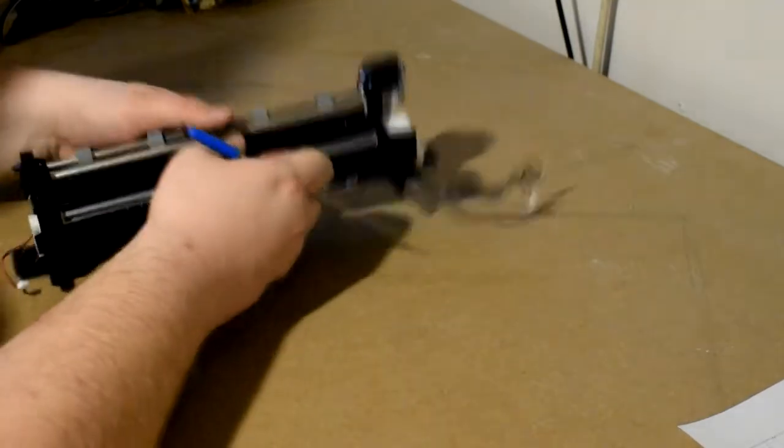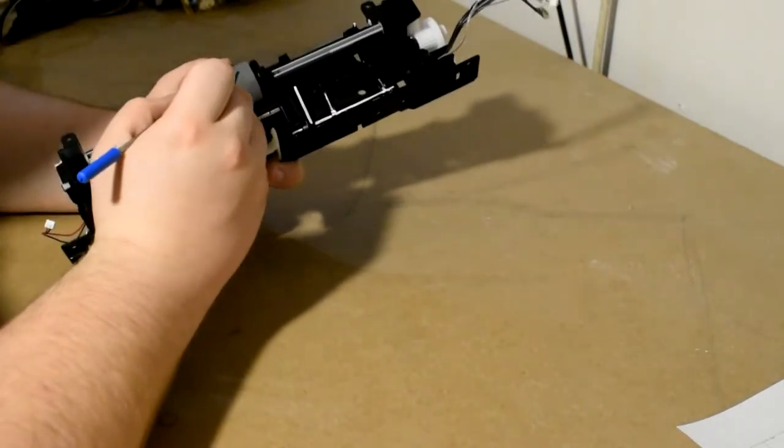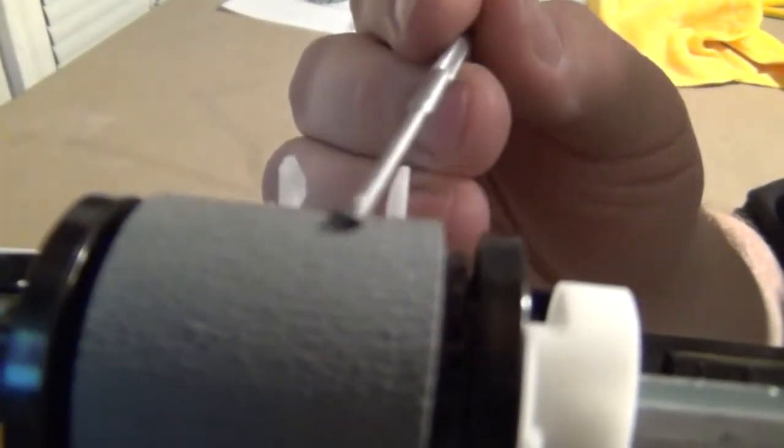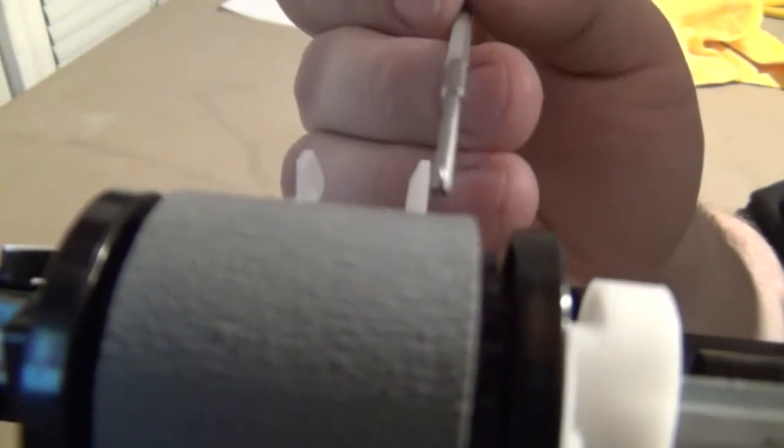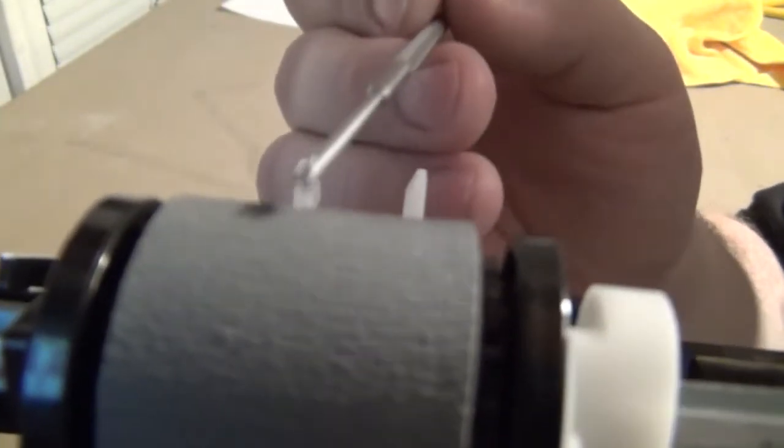As far as the rollers go inside your printer, rollers should have a texture. Let's see if you can see it on this one. If you look, there's like a grainy texture. When these wear out, they'll become smooth. When they become smooth, they're no longer able to pick up the paper.